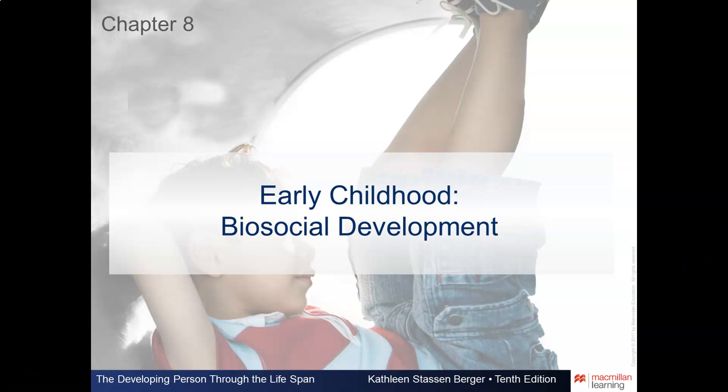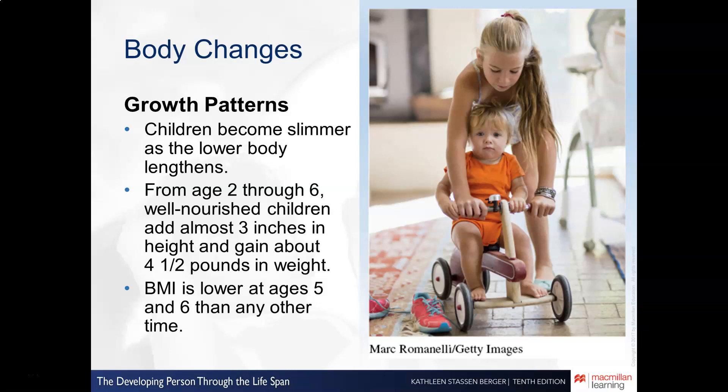In this video we'll take a look at biosocial development as it occurs during the phases of development known as early childhood. Generally between the ages of two through six, as long as a child is well nourished, they might increase in height roughly three to four inches and gain about four to five pounds in weight.